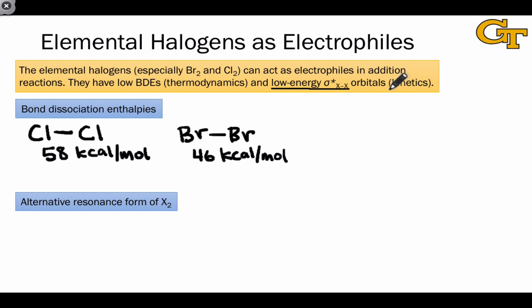This is a kinetic concern since orbital overlap in the reactants is most strongly related to the energy of the transition state. To understand why the energy of the X-X sigma-star orbital is relatively low, we can think about an alternative resonance form for this molecule in which we push the pair of electrons in the X-X bond onto one of the X atoms.